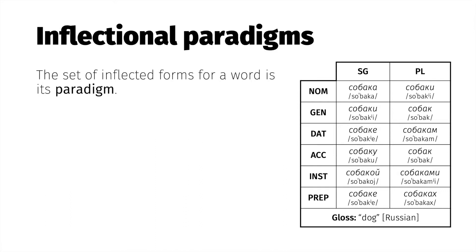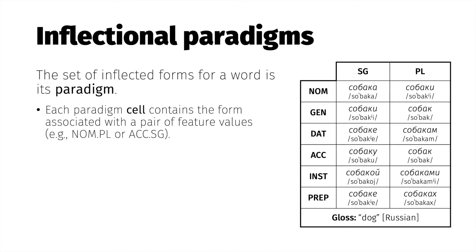I'll refer to the set of inflected forms of a word as its paradigm. Each cell in a Russian noun paradigm is associated with a particular case-number value, so if you want to refer to multiple dogs acting as the subject of a sentence, you'll need the form in the nominative plural cell. A single dog in direct object position calls for the accusative singular form.